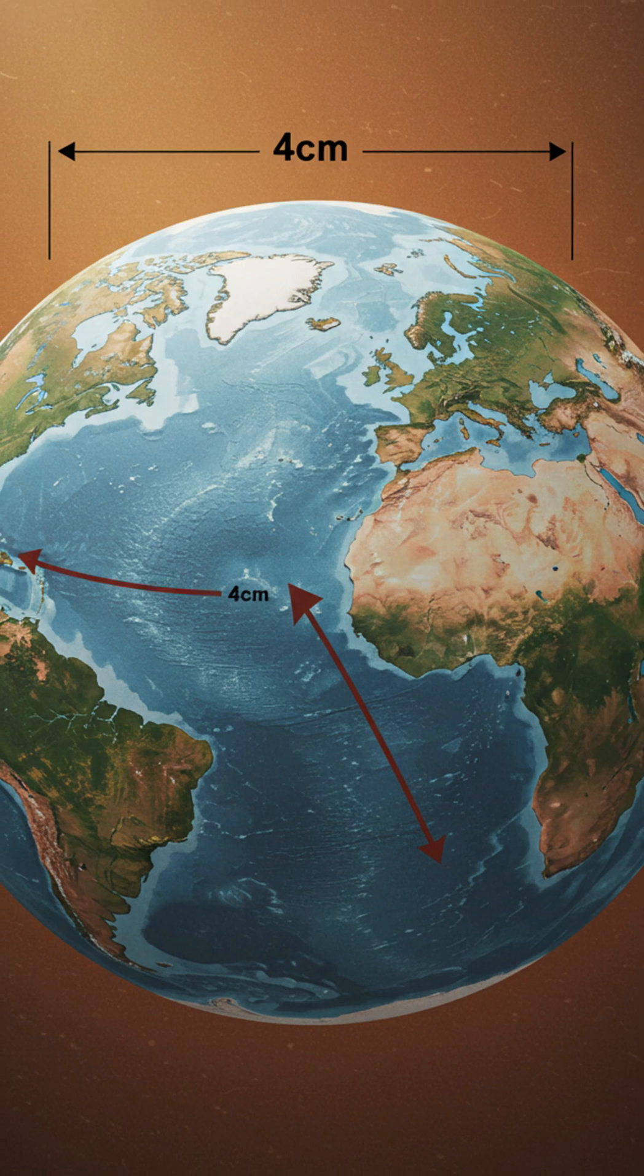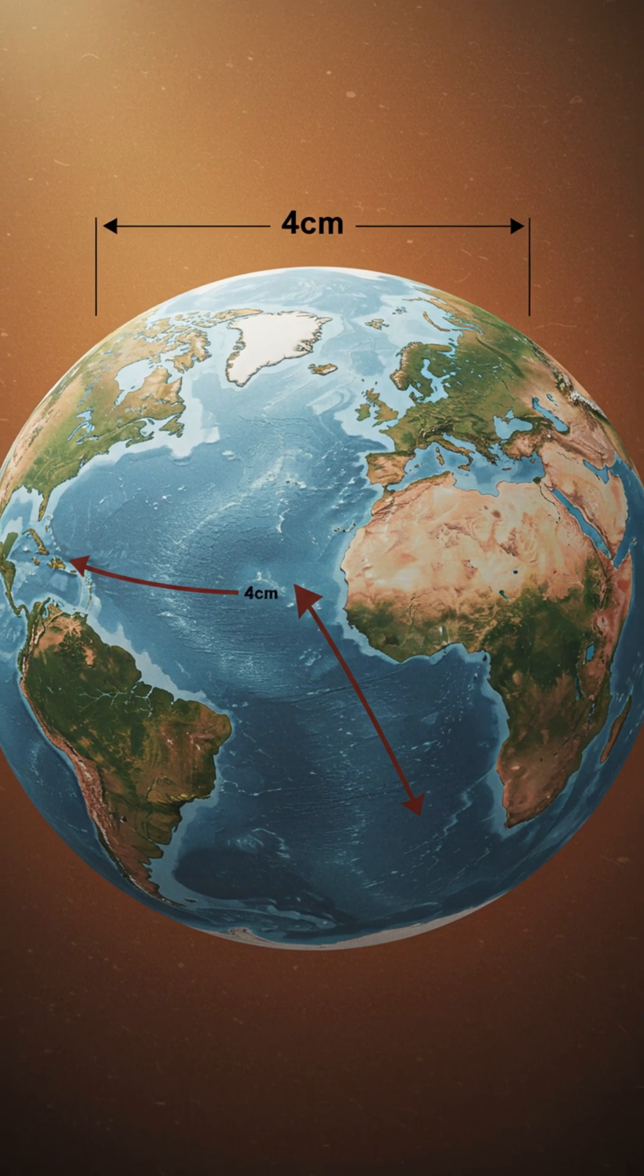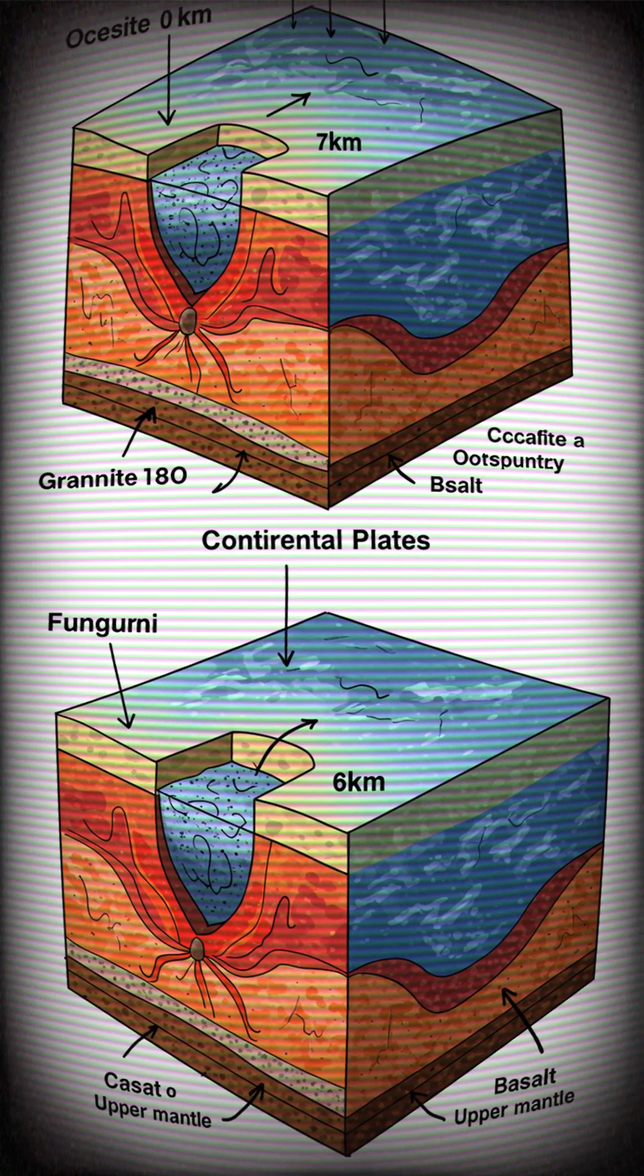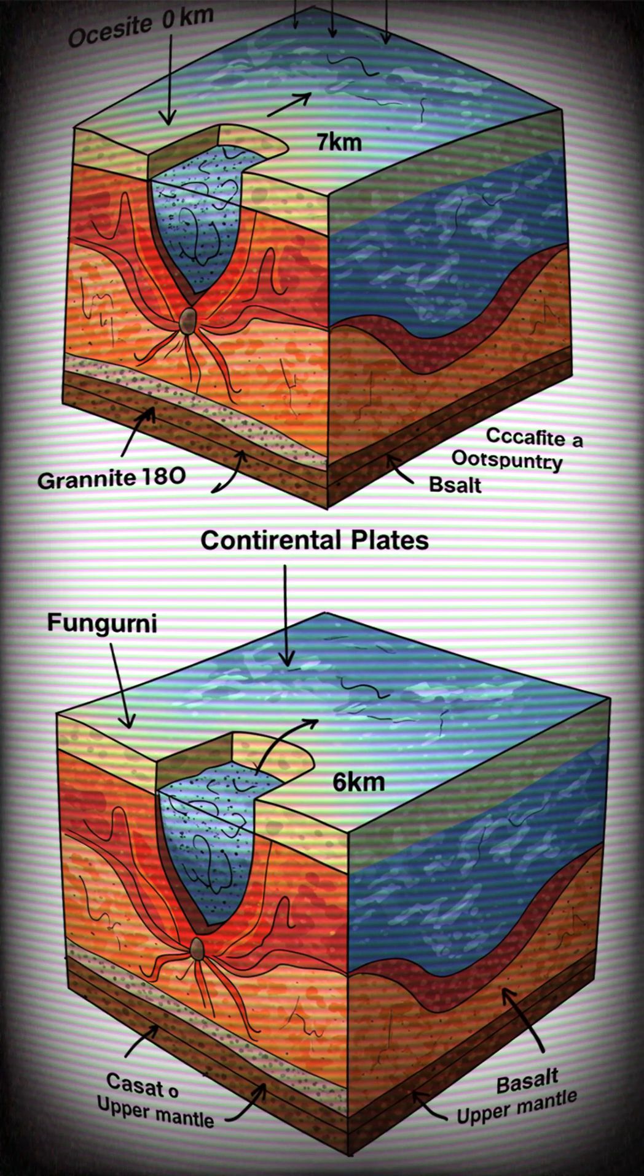The most amazing fact. Europe and America drift four centimeters apart every year. Tropical plant fossils are found in Alaska because it was once at the equator. Continental plates are 70 kilometers thick, but oceanic plates are only 6 kilometers thick. All this happens at the speed of a growing fingernail, just 2.5 centimeters per year.